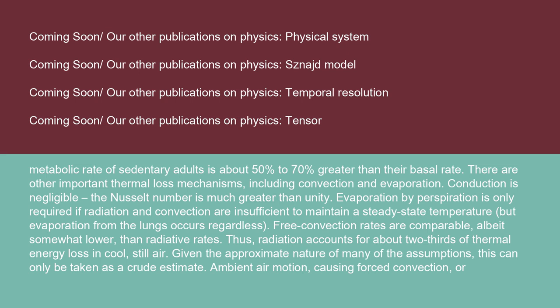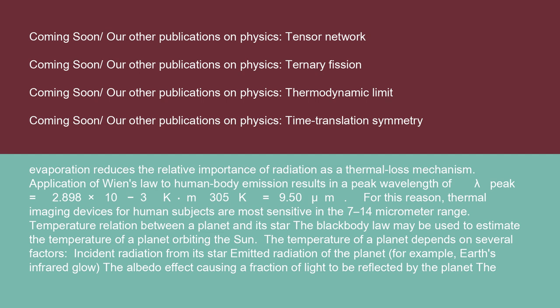Ambient air motion causing forced convection or evaporation reduces the relative importance of radiation as a thermal loss mechanism. Application of Wien's law to human body emission results in a peak wavelength of λ_peak = 2.898 × 10⁻³ K·m / 305 K = 9.50 μm. For this reason, thermal imaging devices for human subjects are most sensitive in the 7 to 14 micrometer range.